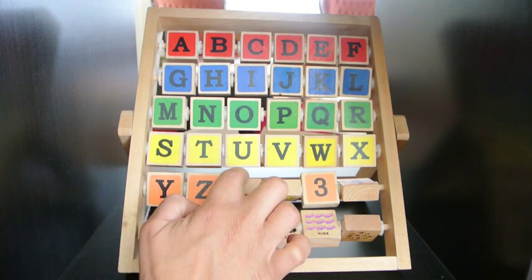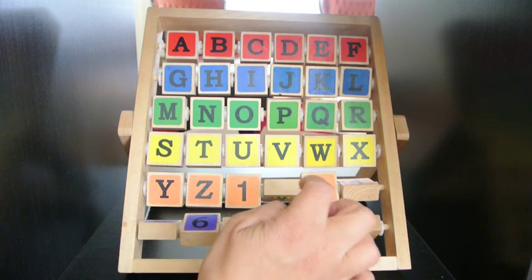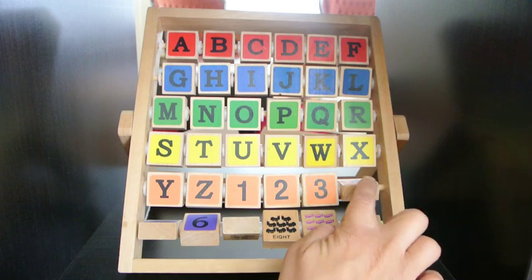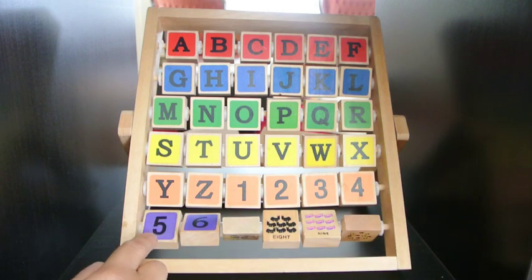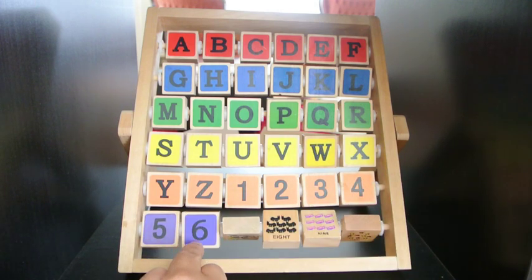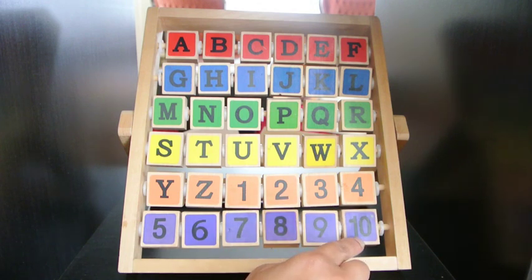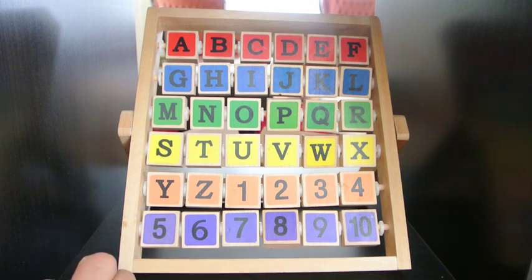And then it's pretty cool because it has the numbers. So we have 1, 2, 3, 4, 5, 6, 7, 8, 9, 10. Let's look behind them.